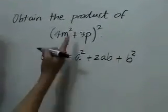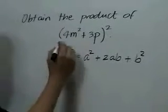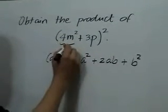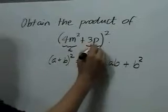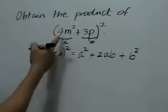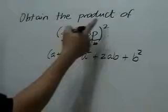So applying this formula to this example and considering this is our a and this is our b, 4m squared plus 3p, quantity squared,